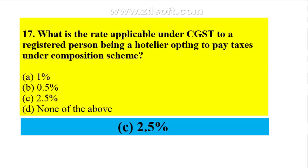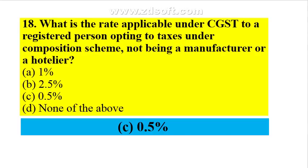What is the rate applicable under CGST to a registered person being a hotelier (restaurant holder) opting to pay taxes under composition scheme? He is liable to pay 2.5% CGST. For persons opting composition scheme who are not manufacturers or hoteliers, the rate is 0.5% only. The 2.5% rate is exclusively for hoteliers.